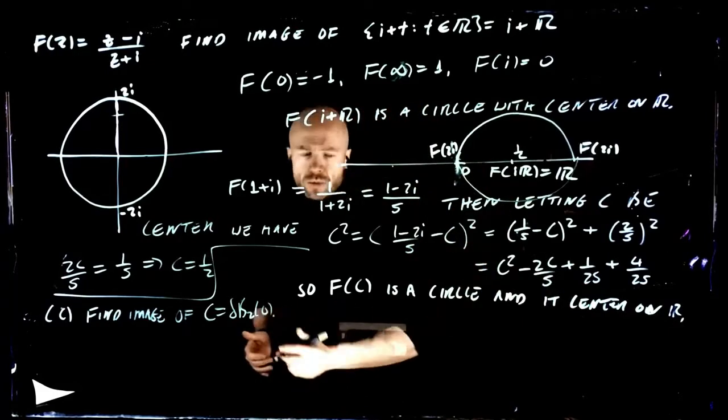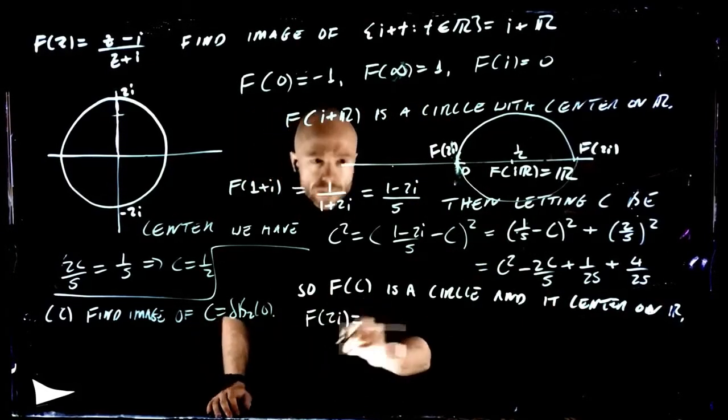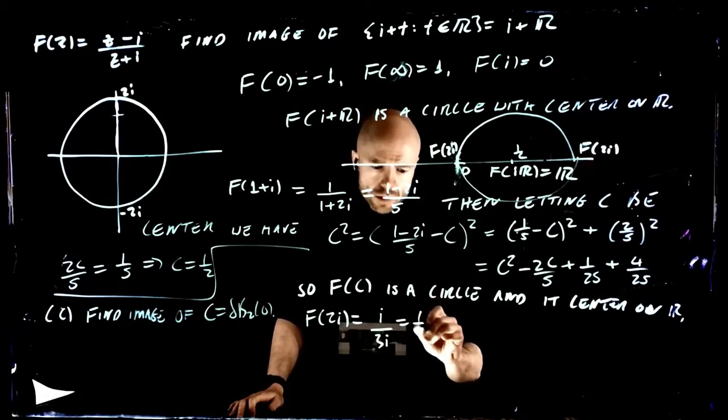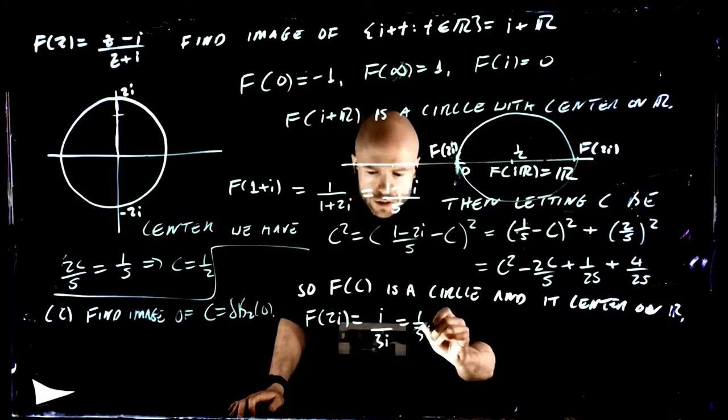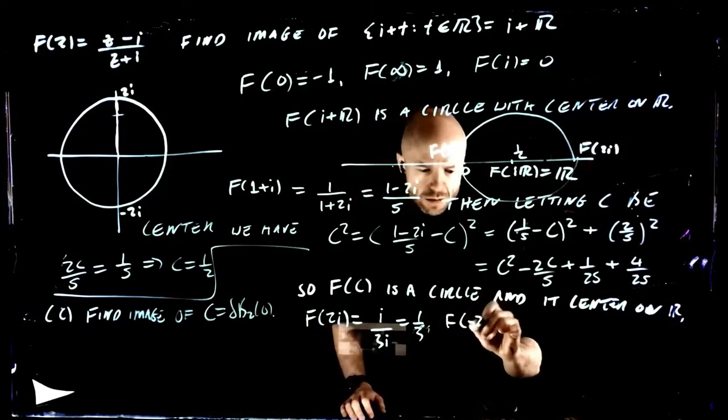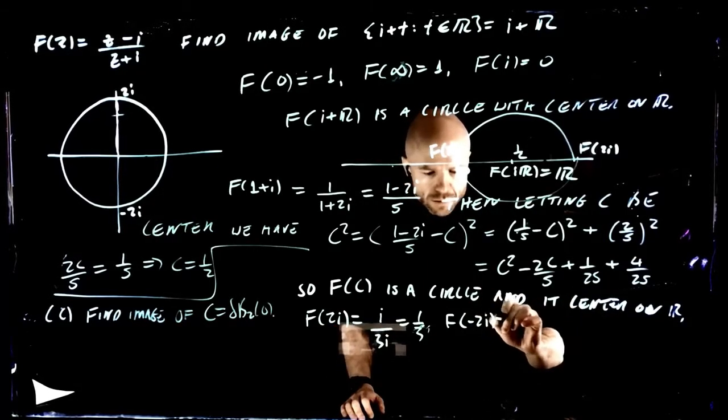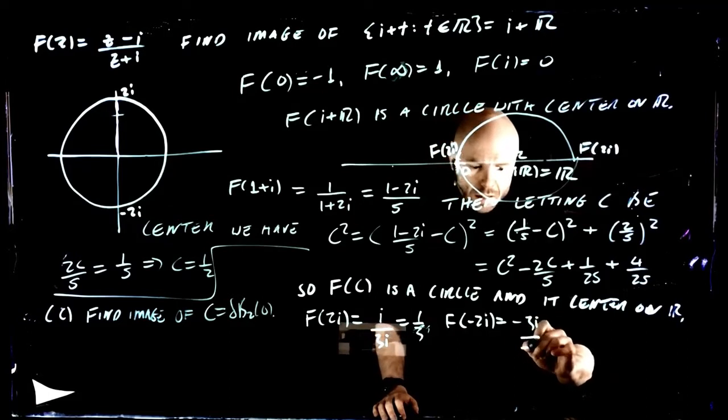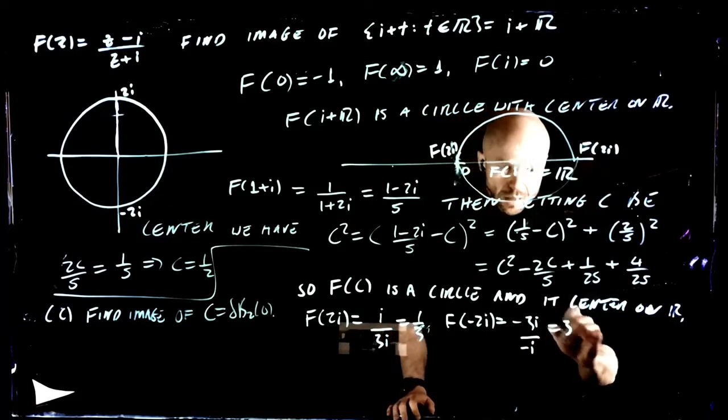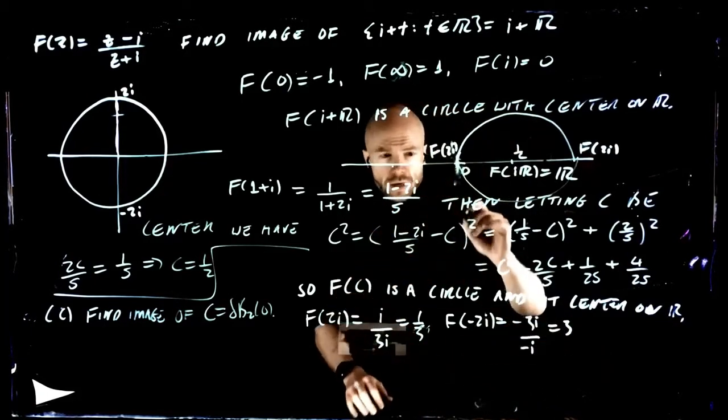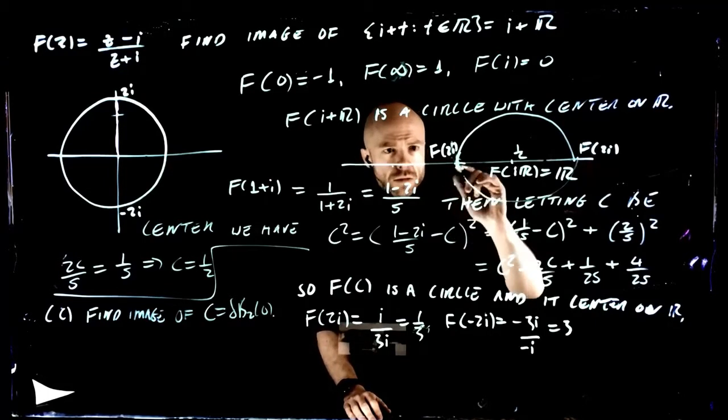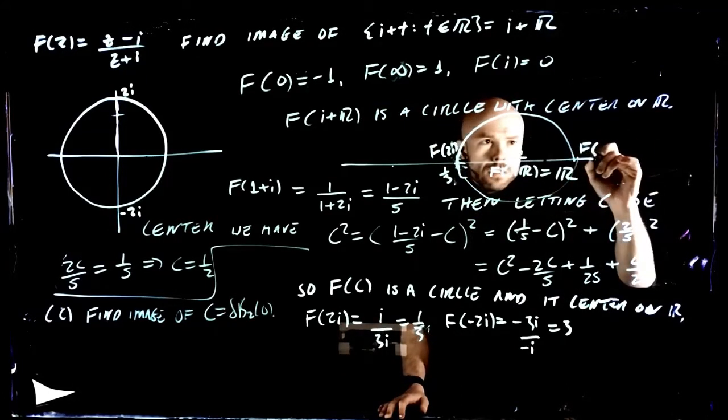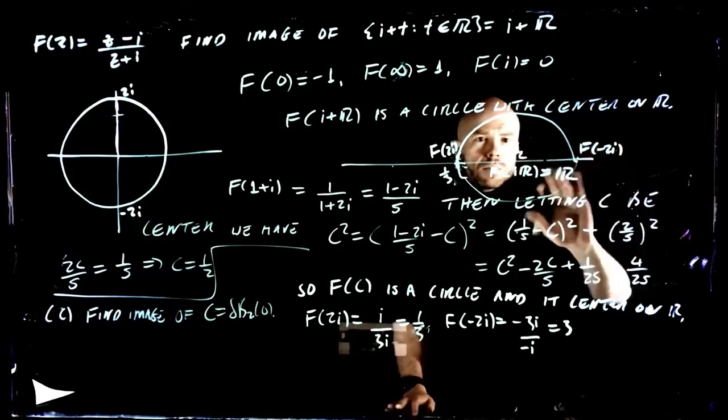It's exactly halfway between these two points, so we can just find what these two points are. So f of 2i is i over 3i, which is 1 over 3. And f of minus 2i is minus 3i over minus i, which is just equal to 3. So we are here at a third and here we are at three.